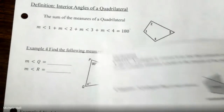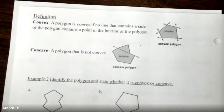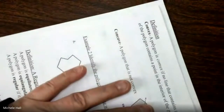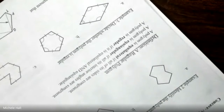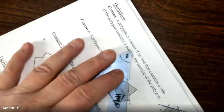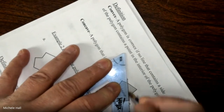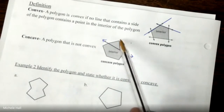Now talking about whether a figure is convex or concave. To check, you take a straight edge and go along the outside. If none of those lines go inside the figure, it's convex. A concave polygon is caved in — you can take a line to a vertex and it ends up going through the middle of the figure. Convex means no line goes inside; concave means it's caved in.